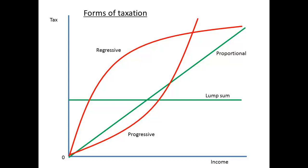The average rate of tax would be given by T divided by Y. The marginal rate of tax is the increase in tax for each monetary unit of increase in income. It would be given by delta T divided by delta Y.